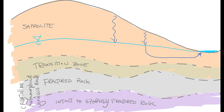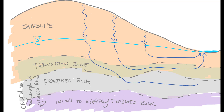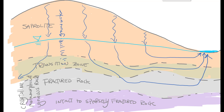And now the flow system. We've got roughly vertical flow down through the vadose zone, and then groundwater flow through the saprolite, transition zone, and fractured rock. Recharge coming in on the left side is on the other side of the groundwater divide, which is right here, so that flow goes off in the other direction. There's the flow paths.